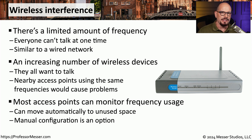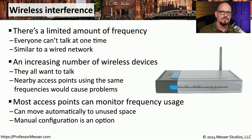Many of the more recent wireless standards provide a way to automatically find the best possible frequencies and avoid frequencies that are already in use by other devices. This can also be configured manually, where you can decide what frequencies to use. But most access points are very good at determining what the best frequency might be, and they're able to change their configuration and move to a better frequency if they detect interference.